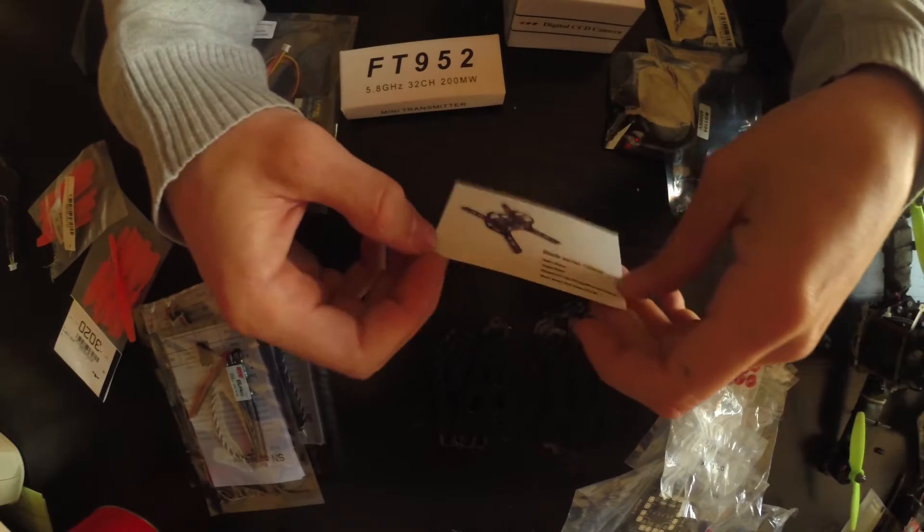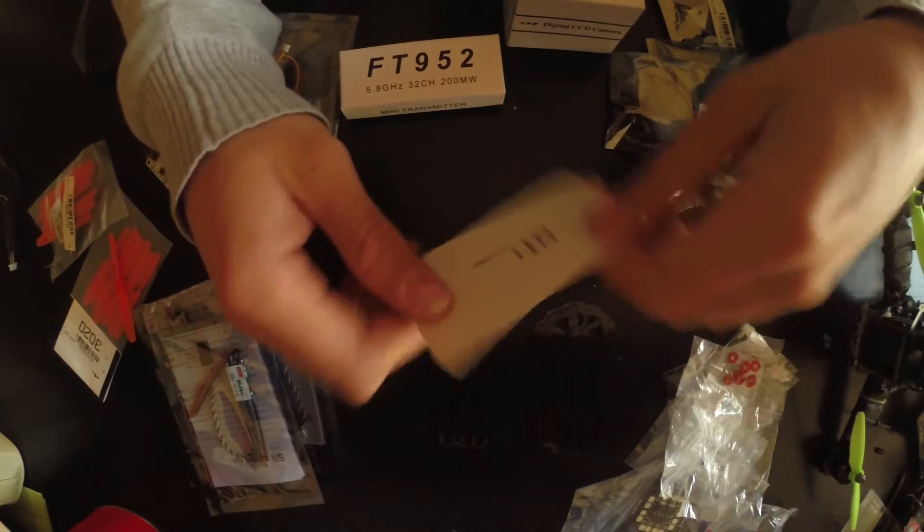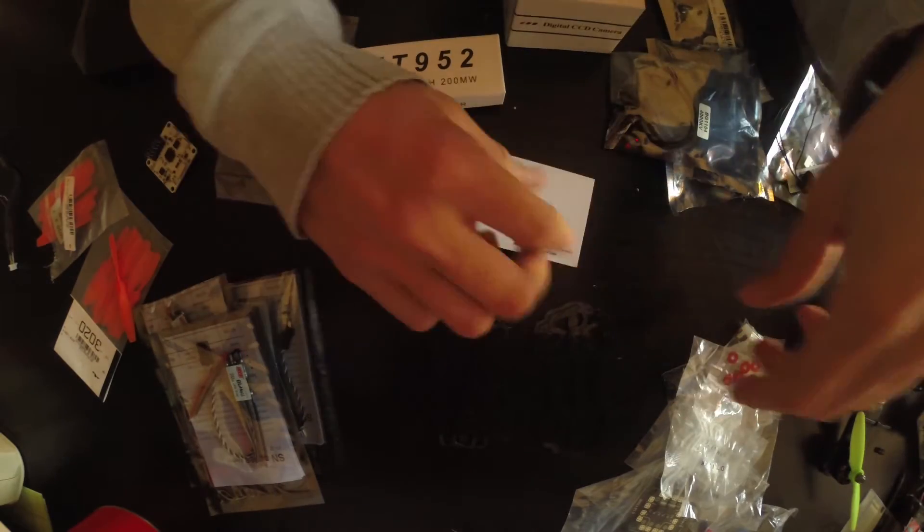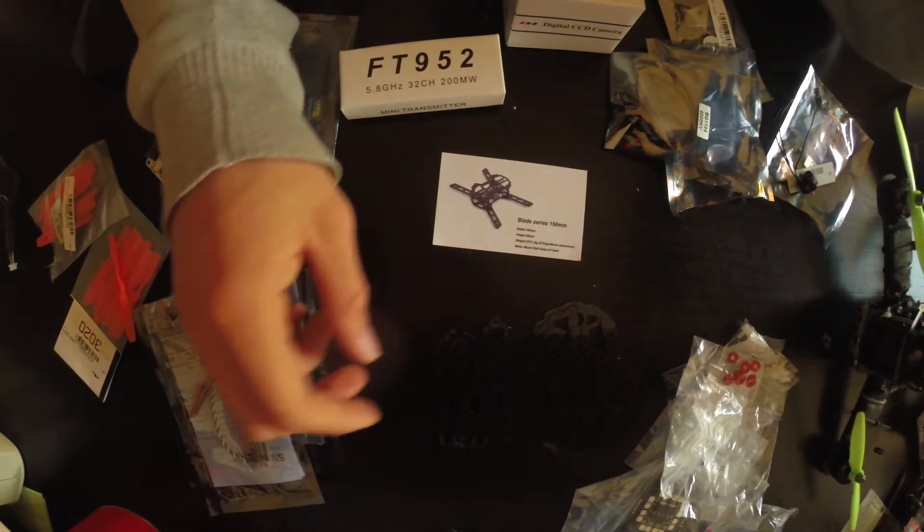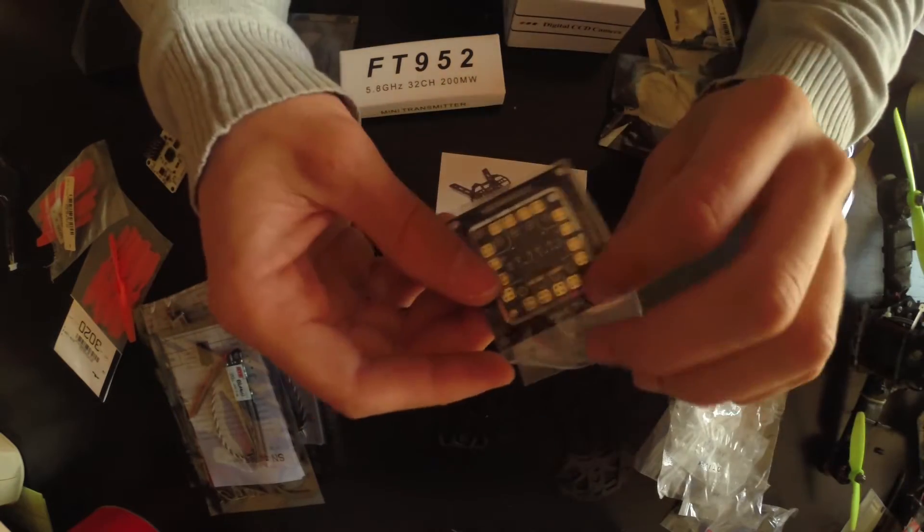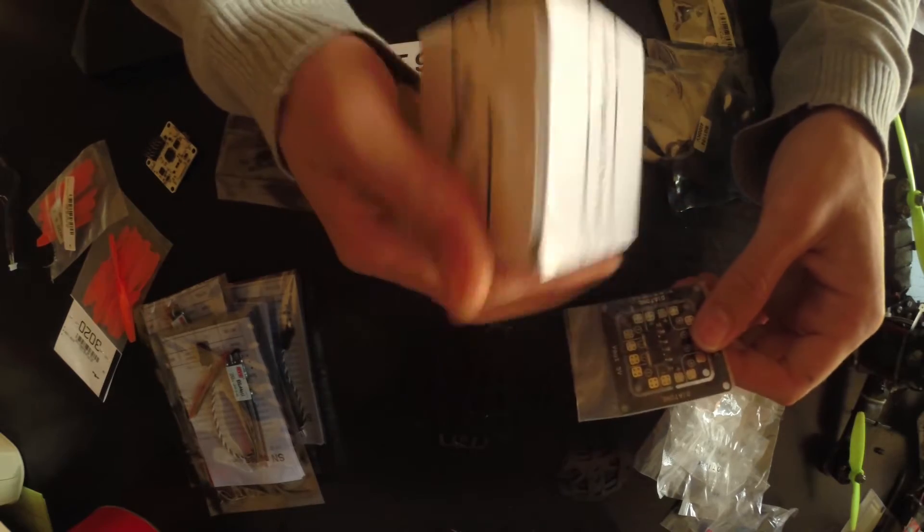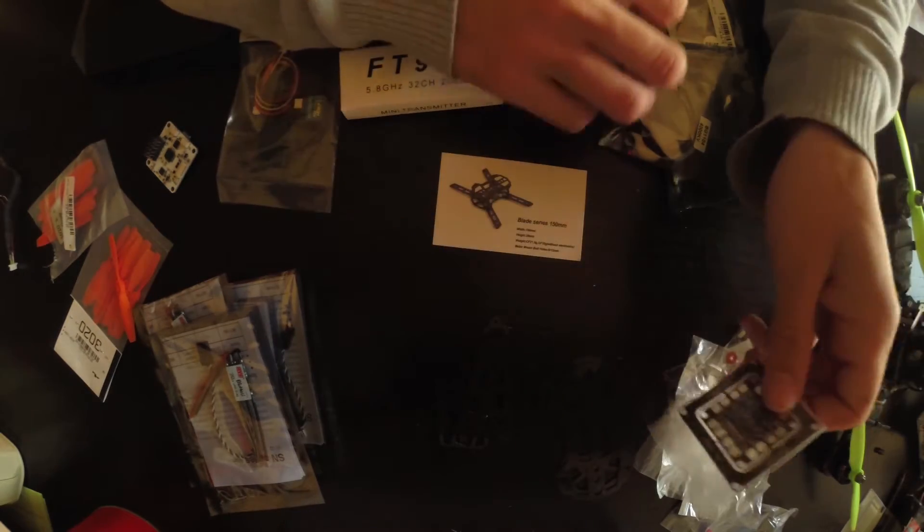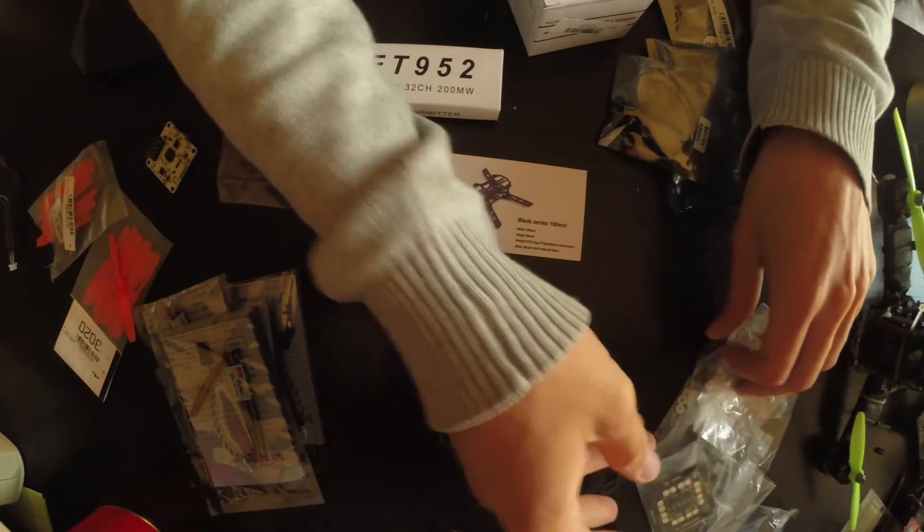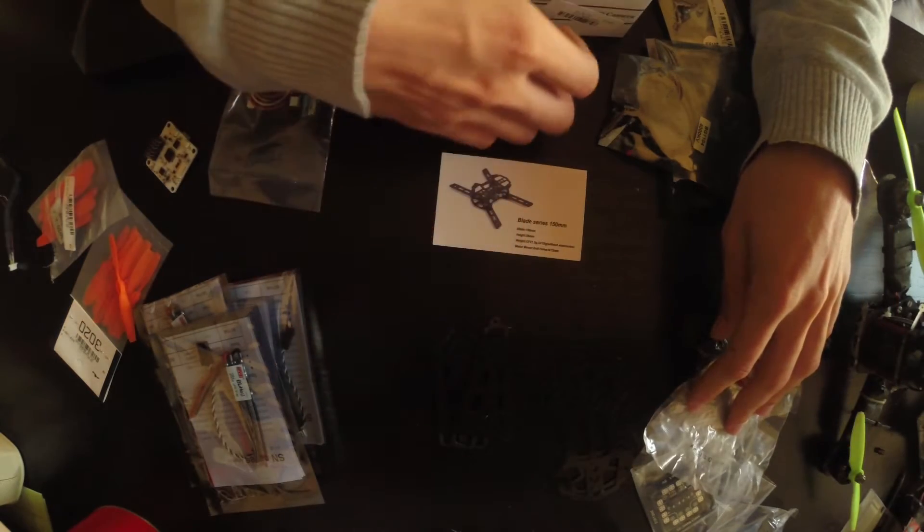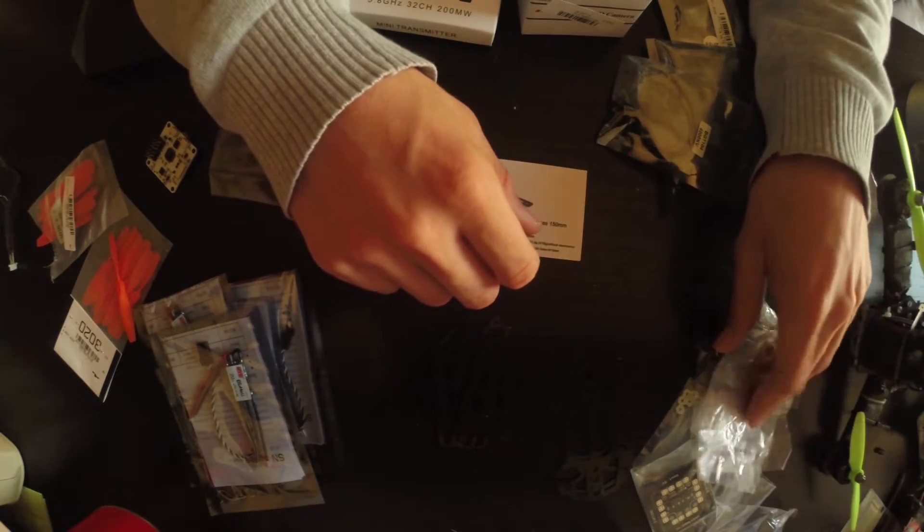Hey guys, today we're going to build a 150 size quad. This is a DTI frame, carbon fiber frame. It has a removable PCB that has a 5 volt out to power your FPV camera. In this case, I'm going to use one because I plan to use this to do FPV.